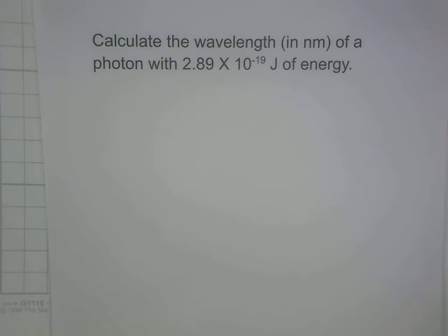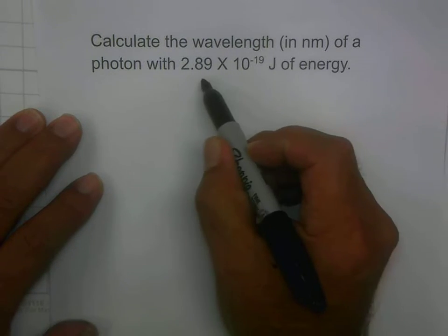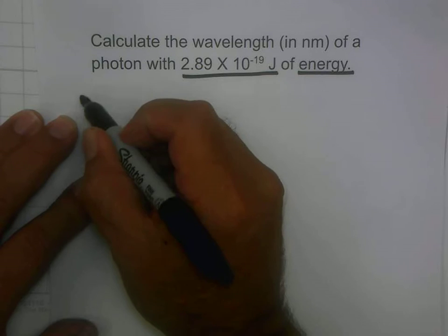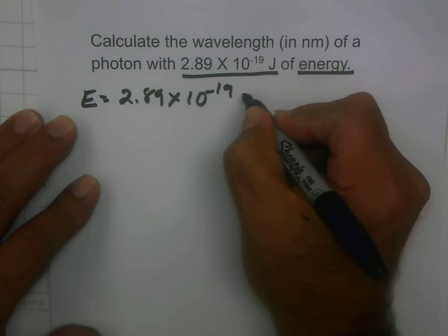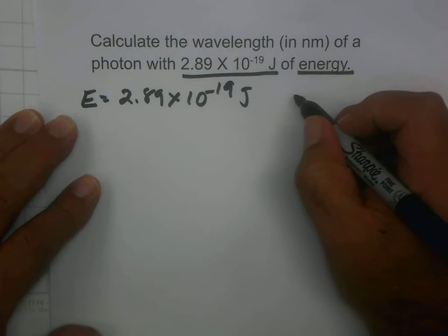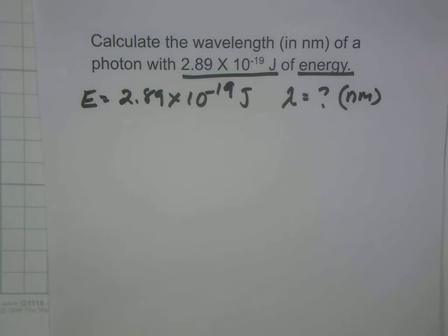I'm going to go ahead and do this problem because even though I didn't have time to do it in class, some people would like to see it done. This problem says: calculate the wavelength in nanometers of a photon with 2.89 times 10 to the minus 19 joules of energy. So we are given energy. This is really my second example problem from class, just done backwards.